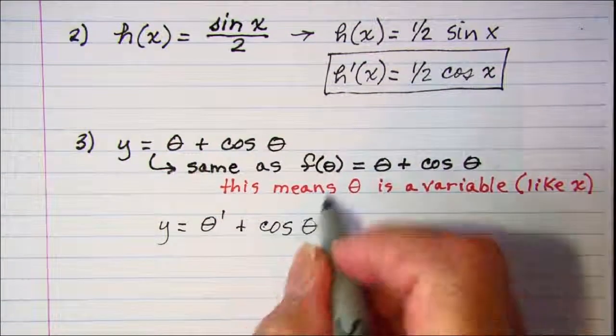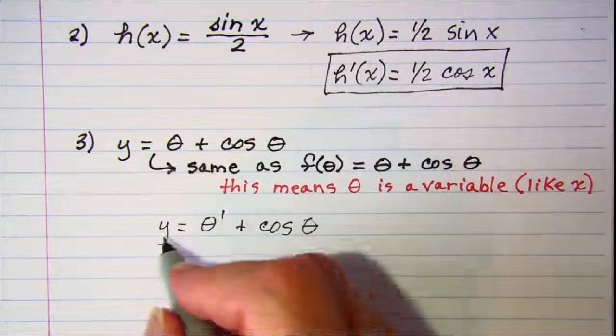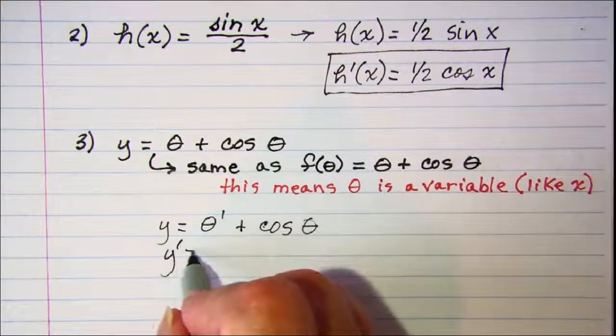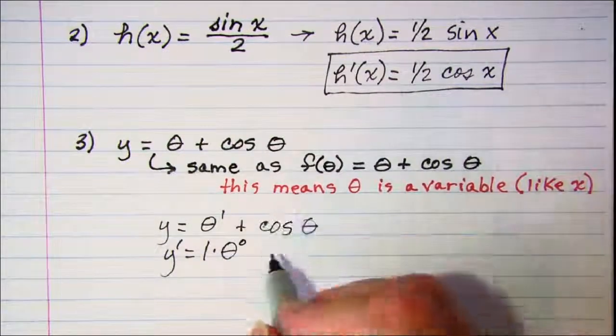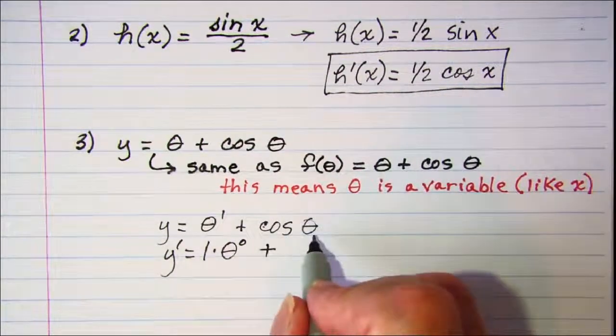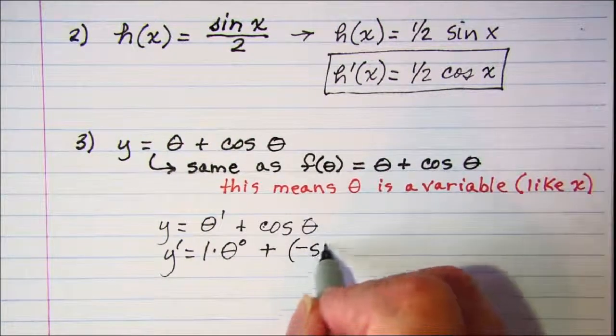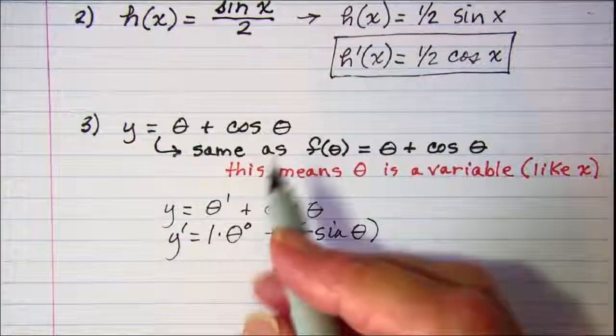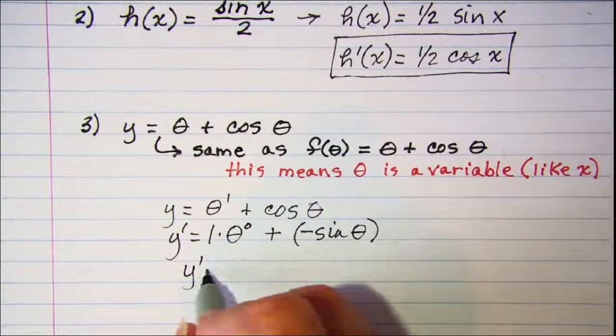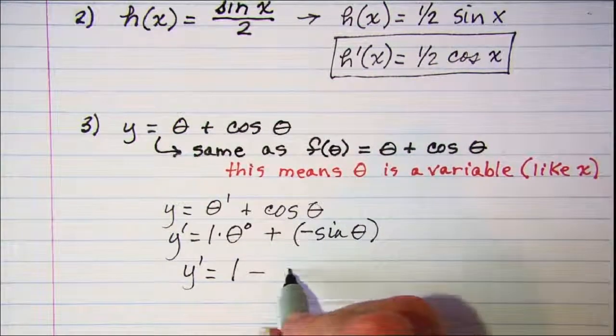And we can use the power rule on this one. Y prime would be 1 times theta to the zero power, and then the derivative of cosine theta is negative sine theta. Simplifying here we get y prime equals 1 minus sine theta.